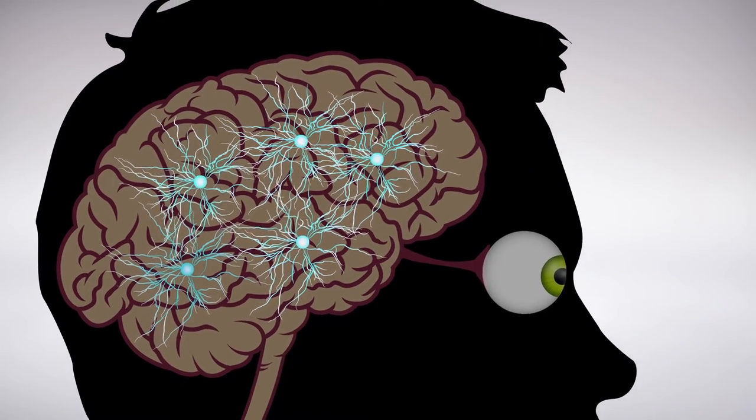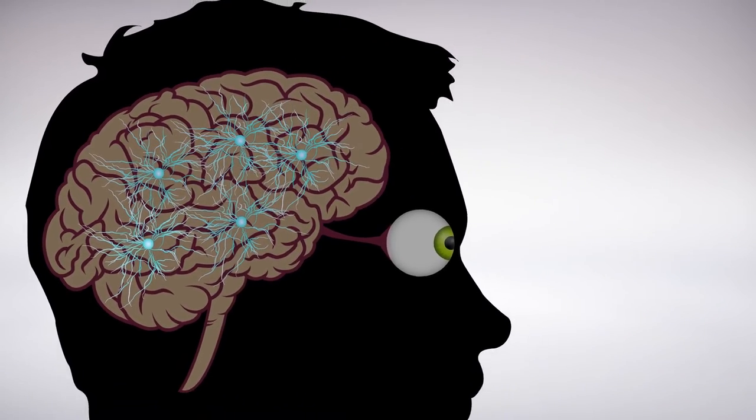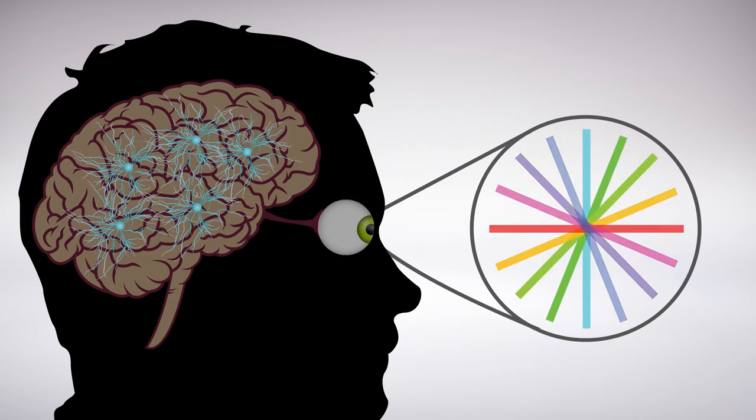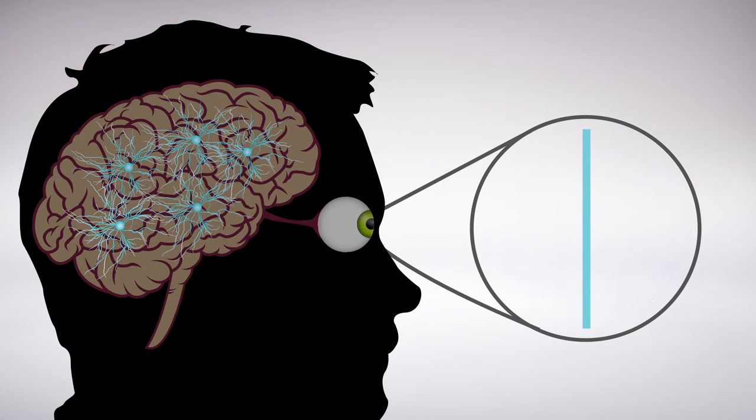Based on the information they receive from the retina, individual neurons in the brain's cerebral cortex respond to stimuli oriented at particular angles. Some prefer vertical edges, some prefer horizontal edges, and others prefer angles in between.